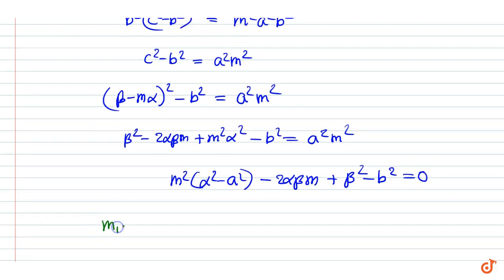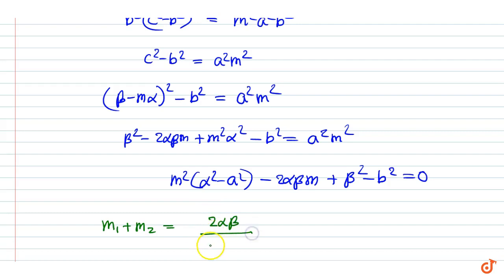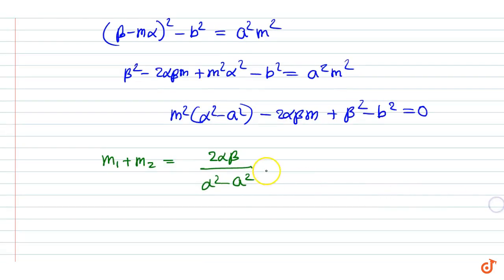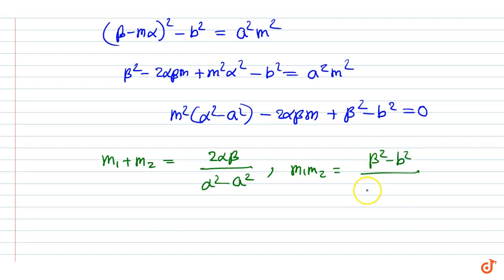So the sum of roots M1 + M2 = 2αβ / (α² - a²), and the product of roots M1·M2 = (β² - b²) / (α² - a²).